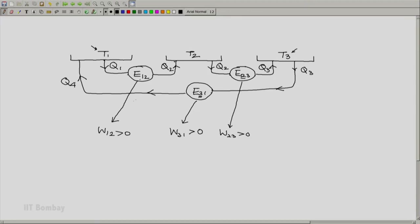Now, notice that W12 is positive, E being an engine. So we should have q2 less than q1. Again, E23 is an engine. So W23 is positive. So we should have q3 less than q2, which in turn is less than q1. So q3 is less than q1.